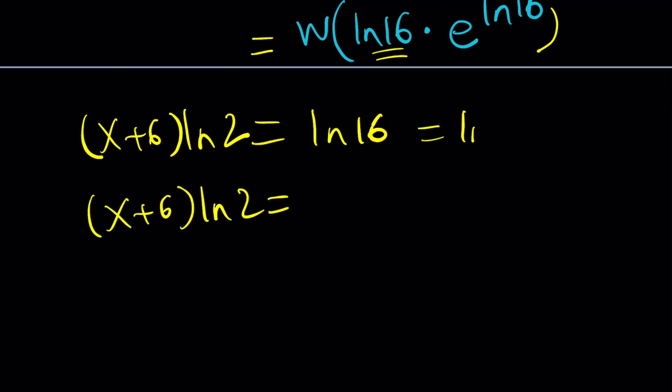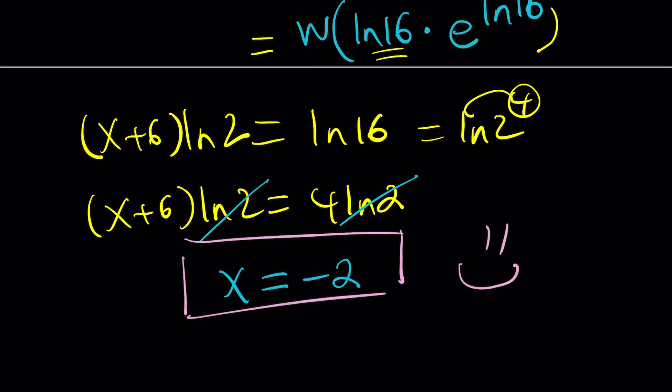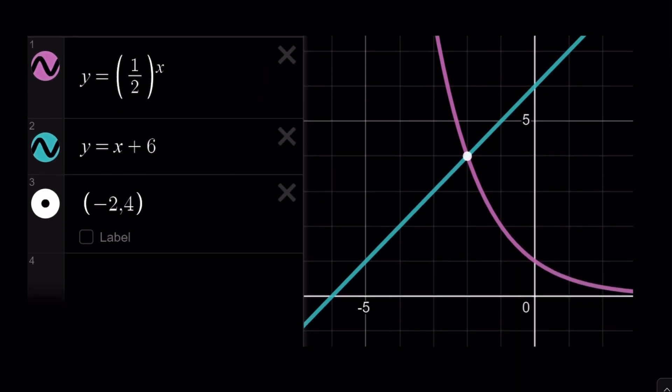ln 16 is ln 2 to the fourth power, which can be written as 4 times ln 2. ln 2 is not 0 as far as I know. So it cancels out, leaving us with x plus 6 equals 4. Subtract 6 from both sides. And you get x equals negative 2 as before. Awesome. And this brings us to the graph, not to the end. And yay! They intersect at a single point. And this brings us to the end of this video.